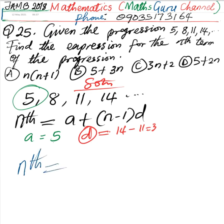nth term is equal to a is 5 plus the nth term we do not know minus 1.